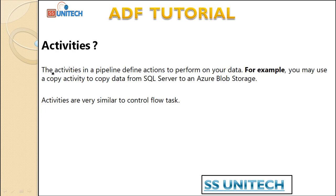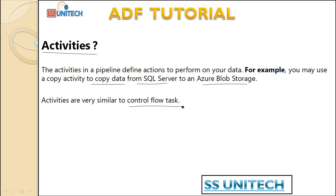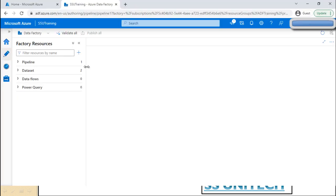Activities in a pipeline define the action to perform on your data. Inside the pipeline, we define what we want to do. For example, if we want to copy data from SQL Server to Azure Blob Storage, we use the copy activity. This is very similar to the control flow task inside SSIS.